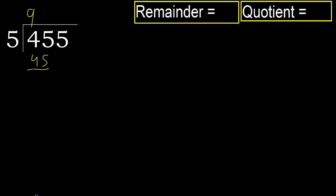45 minus 45 is 0. Eliminate 0 on this side, bring down 5. 5 multiplied by 2 is 10 — that is greater. Multiply by 1 is 5, which is not greater.